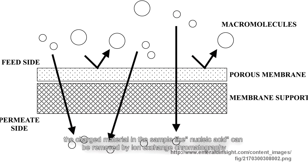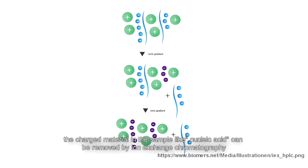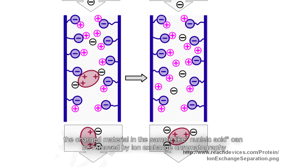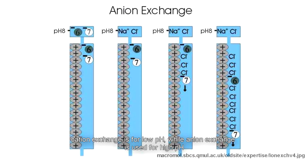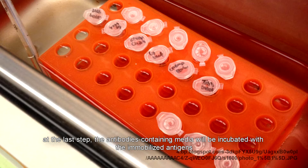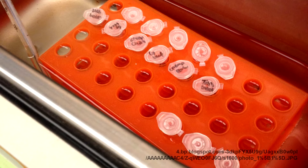Charged material in the sample, like nucleic acid, can be removed by ion exchange chromatography. Cation exchange is used for low pH, while anion exchange is used for high pH. In the last step, the antibodies-containing media will be incubated with the immobilized antigens.